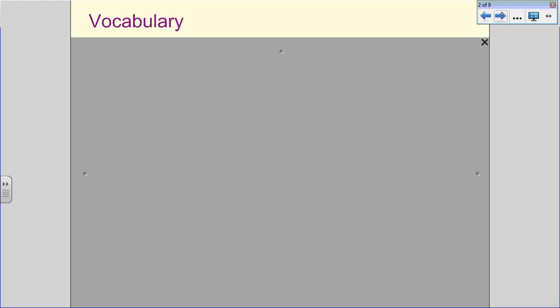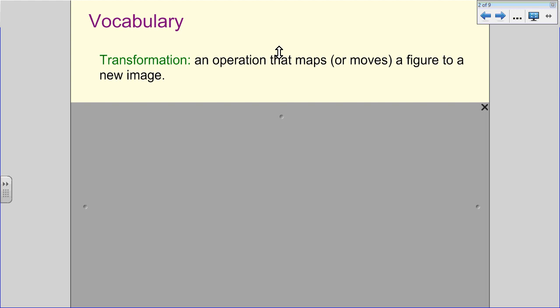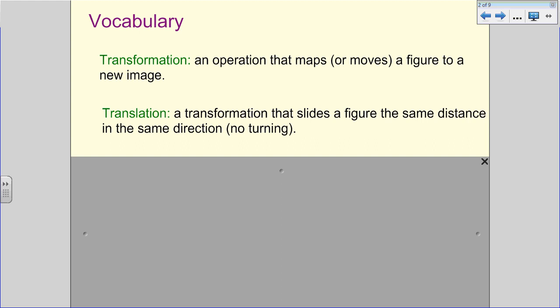So let's take a look at the vocabulary. The first word, and I'm going a little bit out of order, I want to define for you what a transformation is. It's an operation that maps, or another word for mapping is to move an object, or move a figure, to a new image. And so we still have this image, it's going to hold its shape. It's not going to change shape, but it's going to move along here.